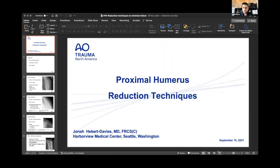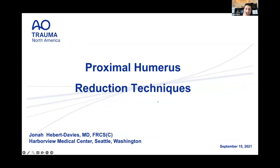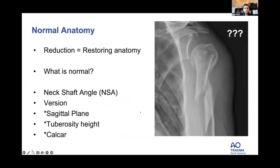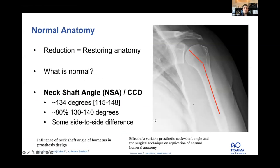Next up, Jonah. I think proximal humerus fractures are some of the hardest fractures to do, even after a long time and many fellowships. The number one thing is to understand what you're looking at and figure out ways to get them reduced. What's normal? The parameters we look at are neck-shaft angle or CCD, version, sagittal plane, tuberosity height, and the calcar.